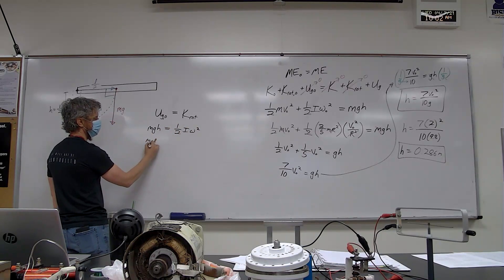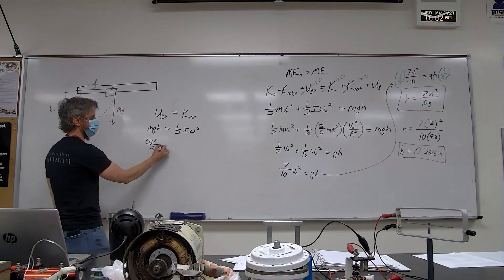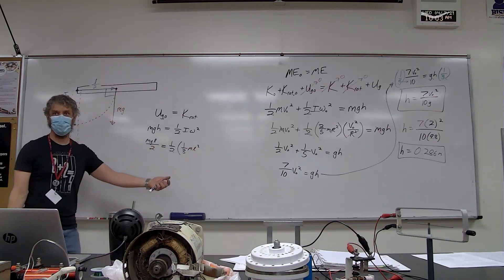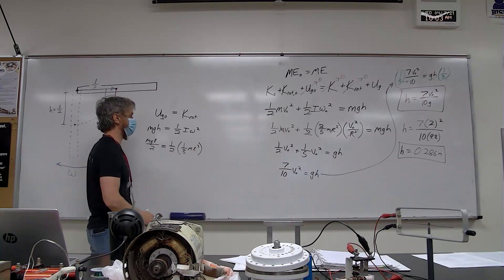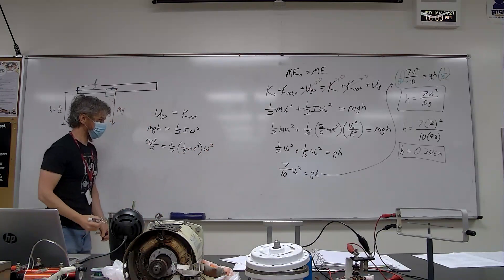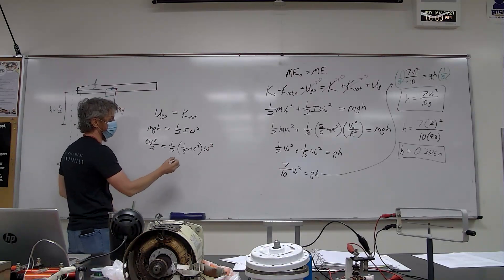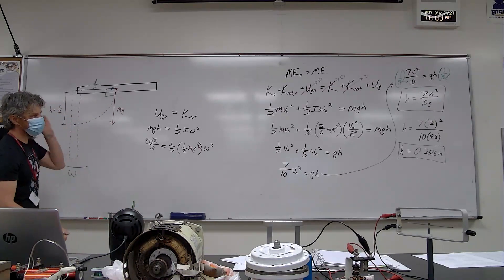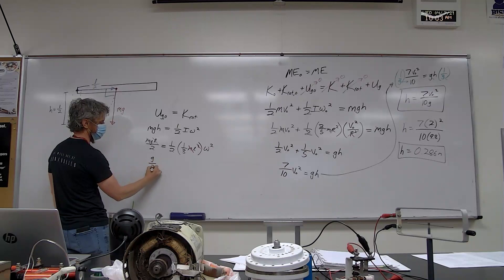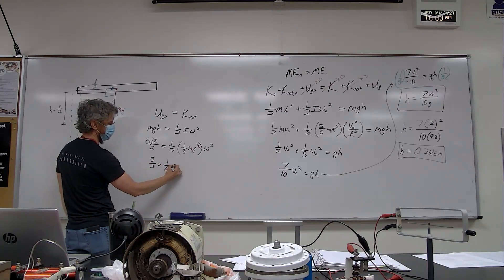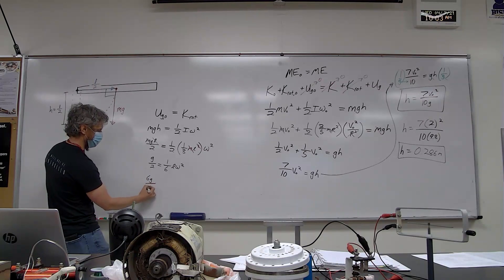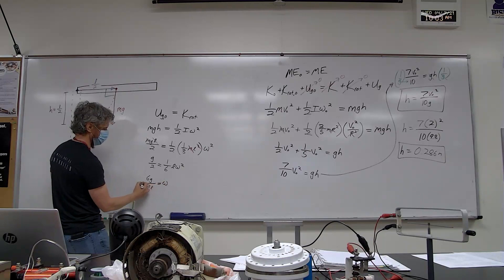Setting mgh = ½Iω²: mg(L/2) = ½ × (⅓mL²) × ω². The rotational inertia of a rod about its end is ⅓mL² (given to you if needed). Mass cancels, leaving g/2 = (1/6)Lω². Multiply both sides by 6 and divide by L: ω² = 3g/L, so ω = √(3g/L). With algebra and rotational energy we solve it in a few steps — doing this with Newton's laws would be a calculus nightmare.